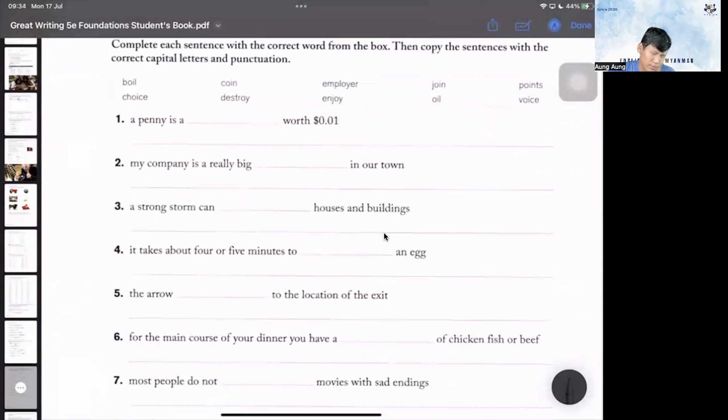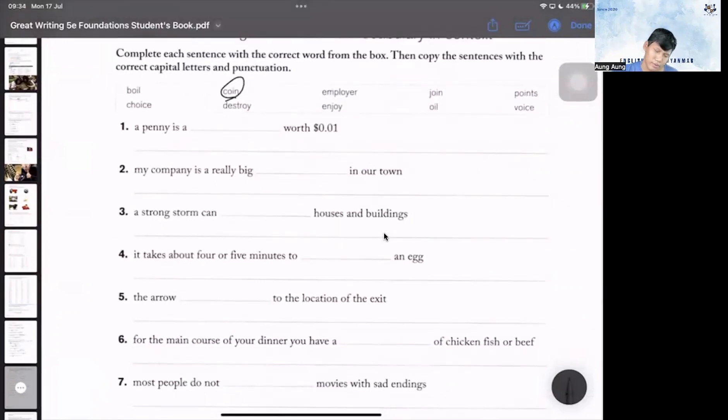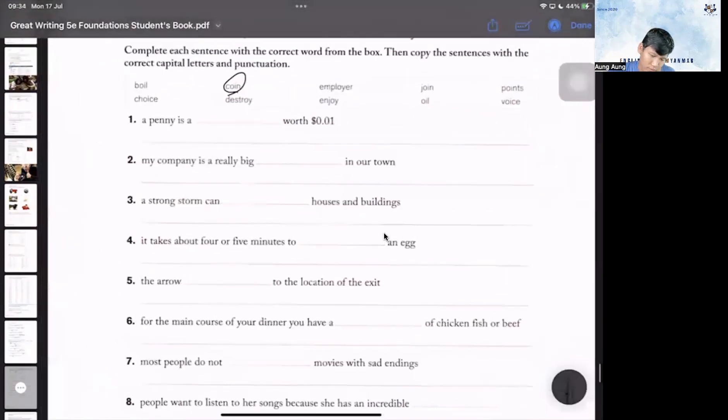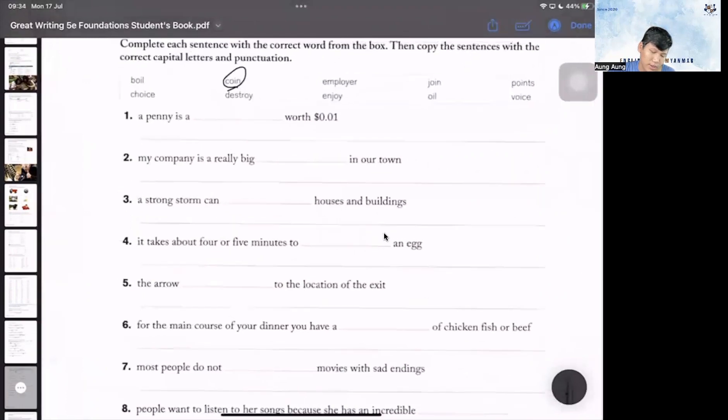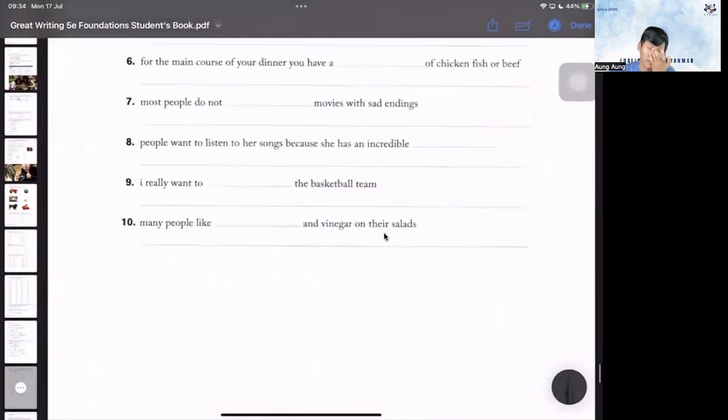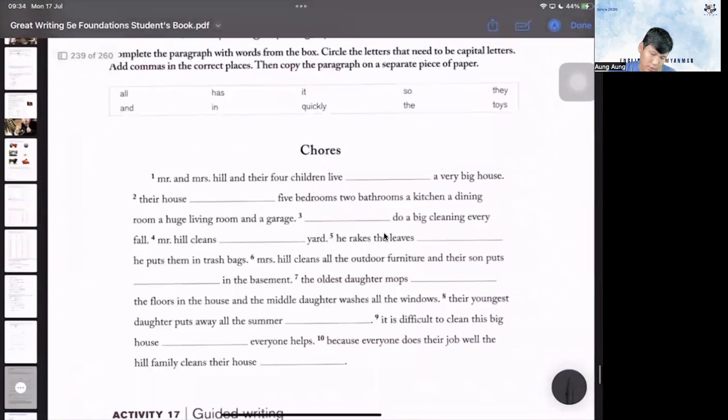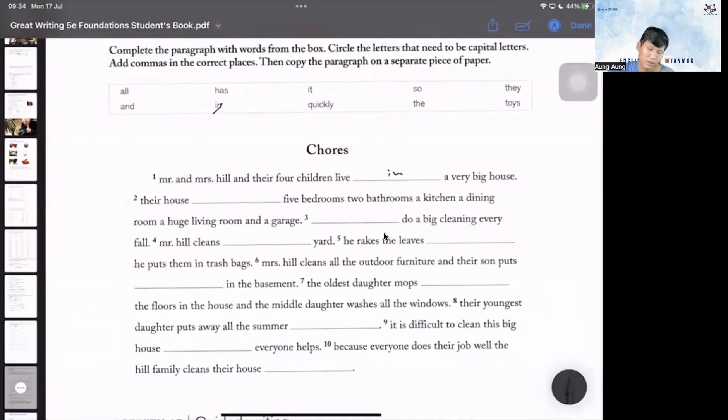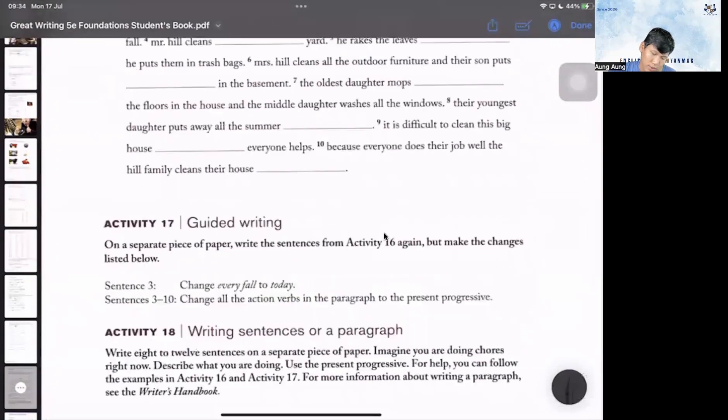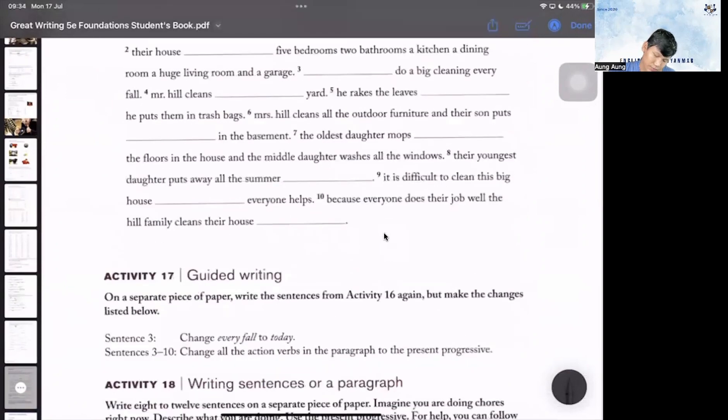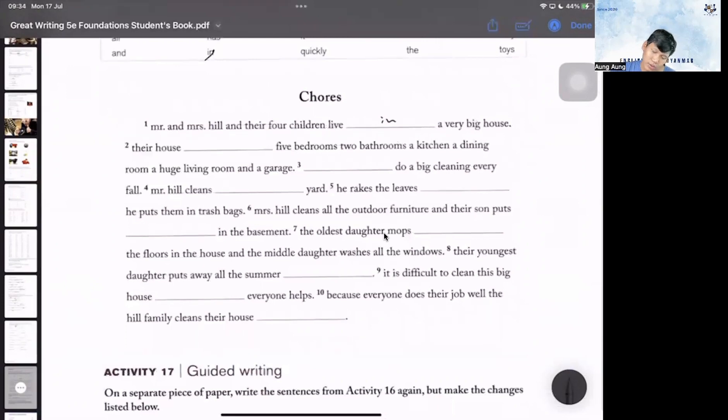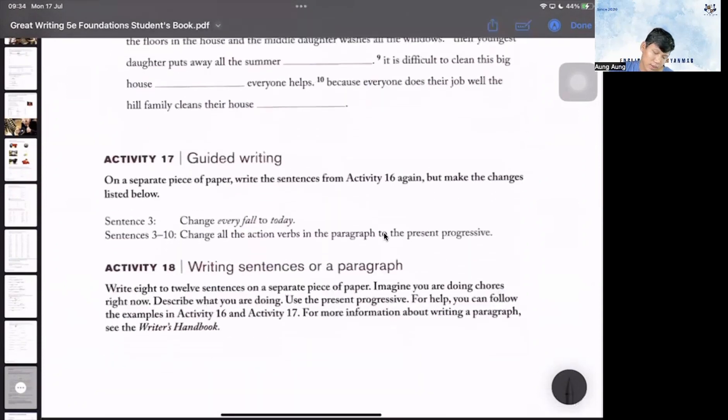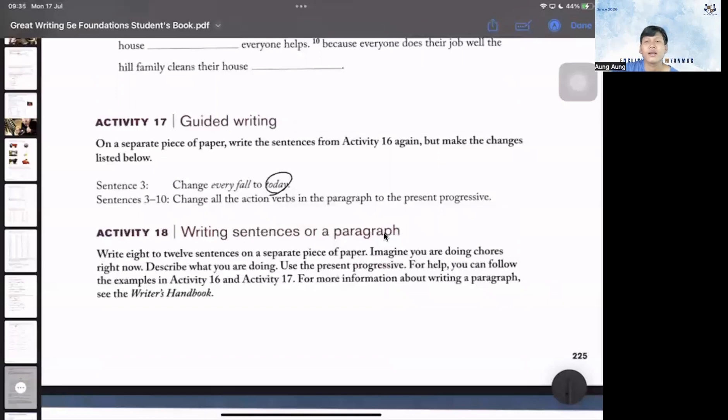The messing is here, we've got a penny is a coin. Mr. and Mrs. Hill and their four children live in a very big house. They do a big cleaning every fall. Activity 17: on a separate piece of paper, rewrite the sentences from Activity 16, but make the changes. And Activity 18 covers writing sentences or a paragraph using the present progressive.